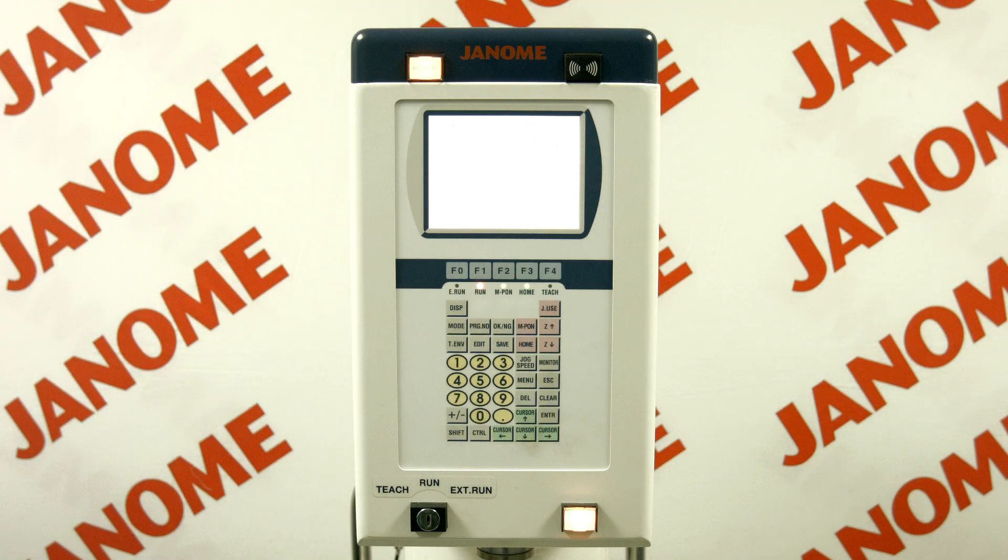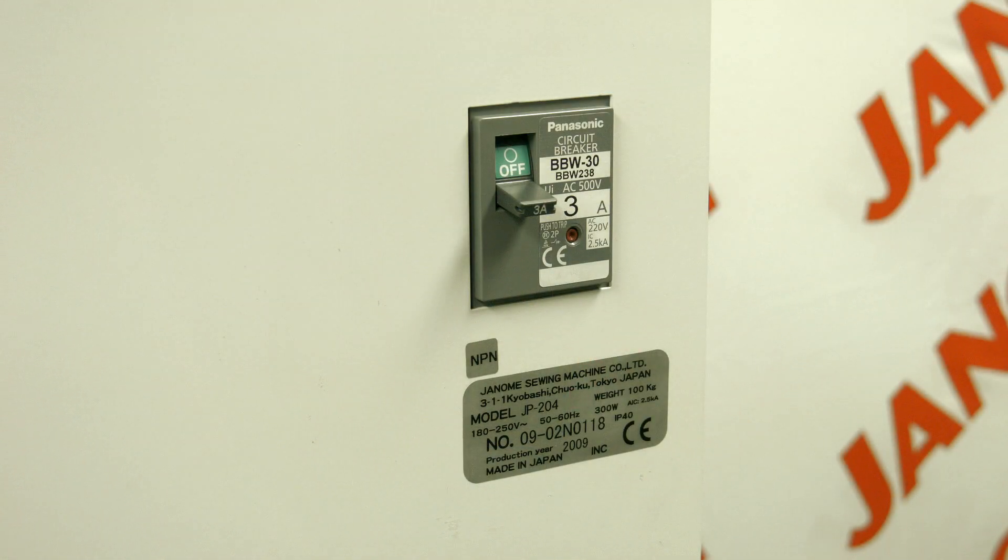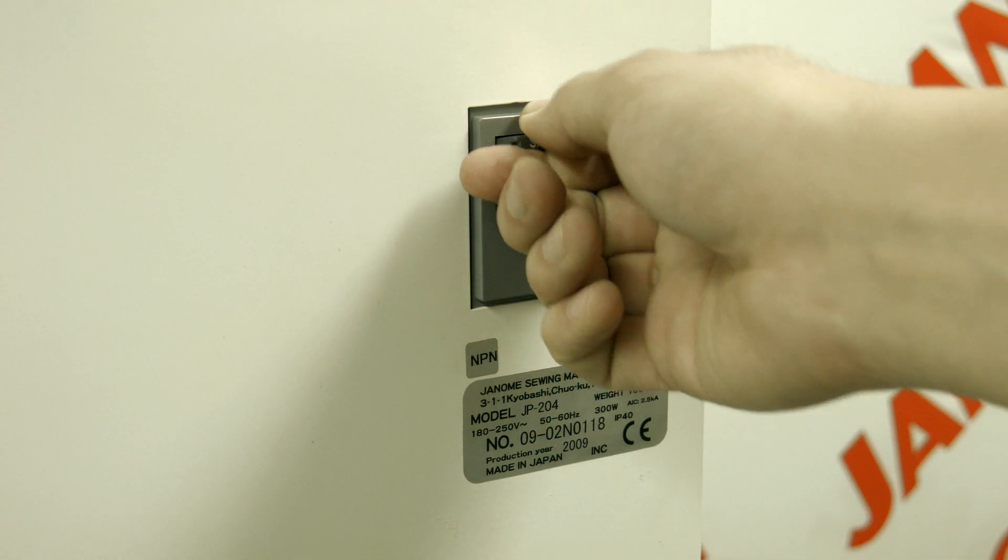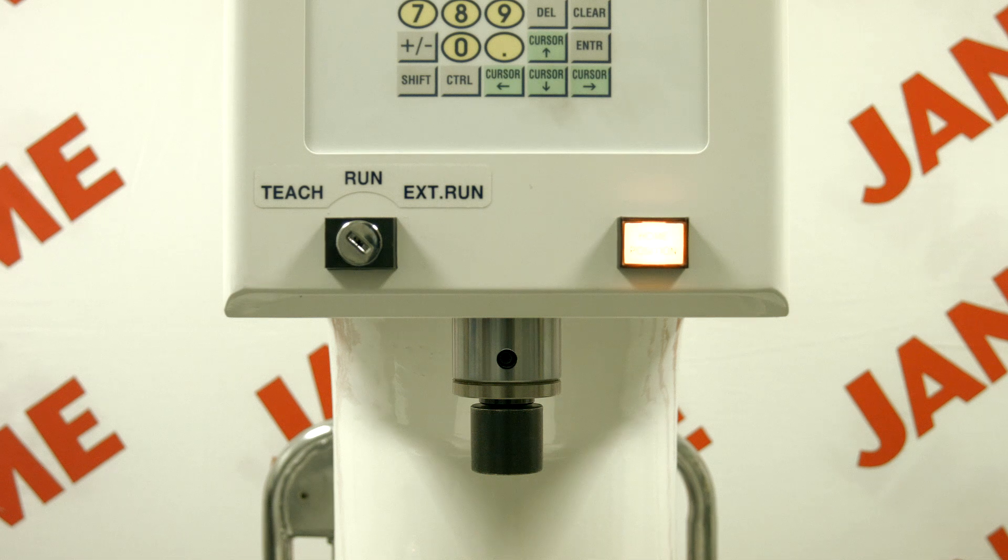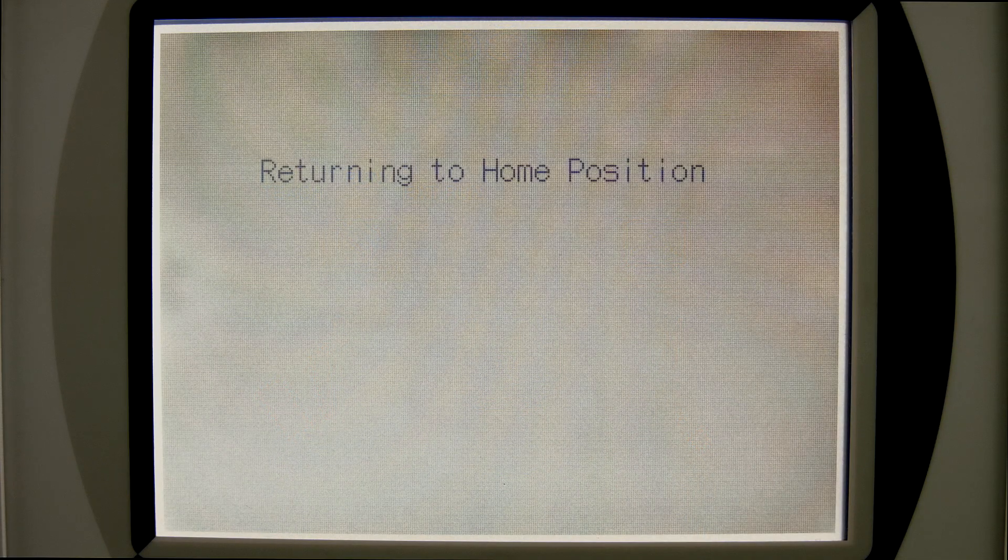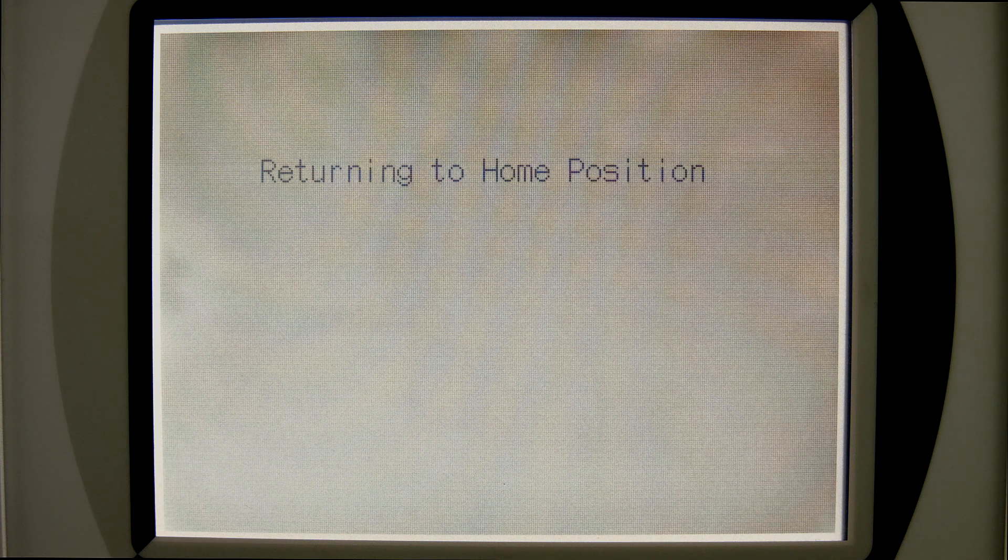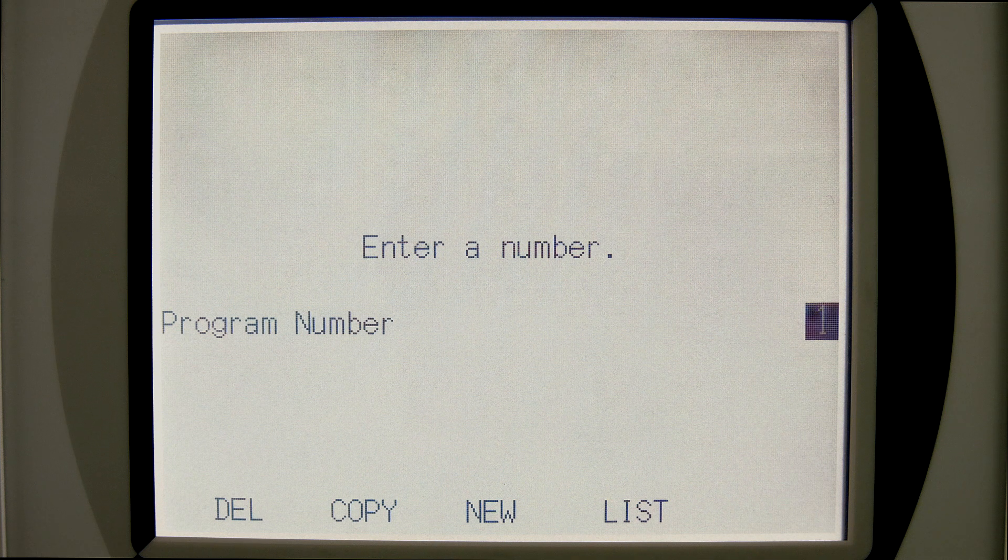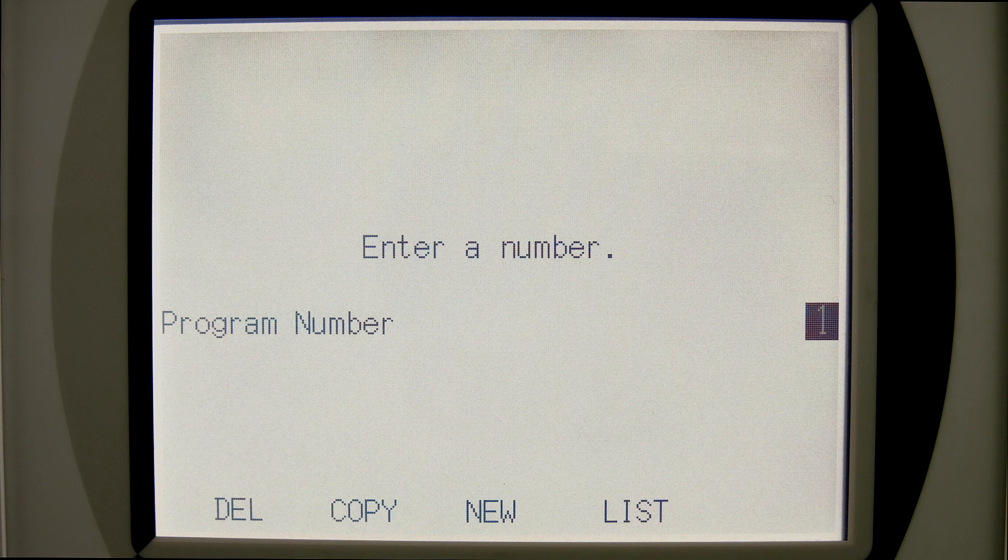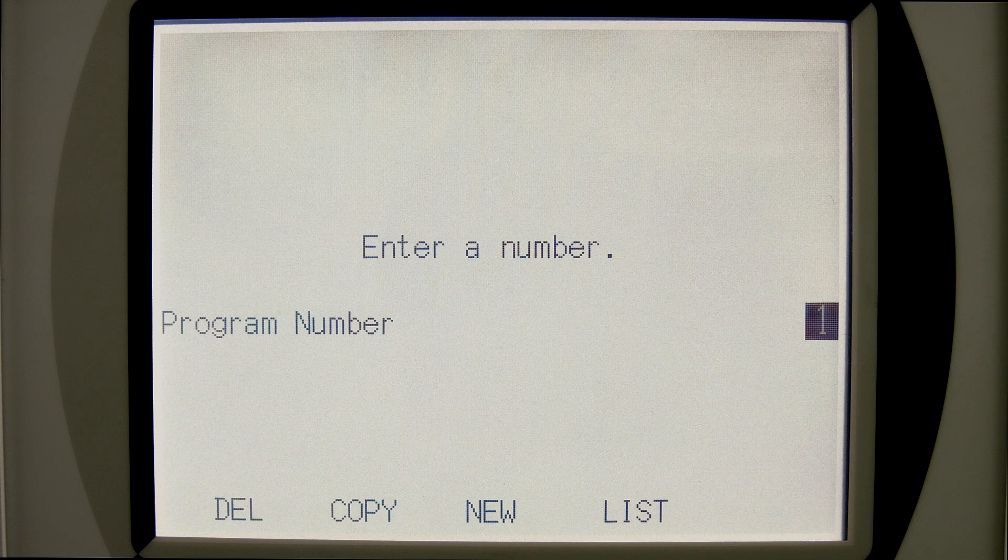Programming can be accomplished through the operation panel when the selector key is switched to teaching mode. When the press is powered on, the following message is displayed. Press the home position return switch slowly. The message returning to home position will be displayed on the LCD screen, and the RAM will slowly ascend to the home position. After the RAM has reached home position, the message shown will be displayed. This message will appear if there is no program that contains teaching data. If there is any program that contains teaching data, the program selected when the electropress was turned off will be displayed.